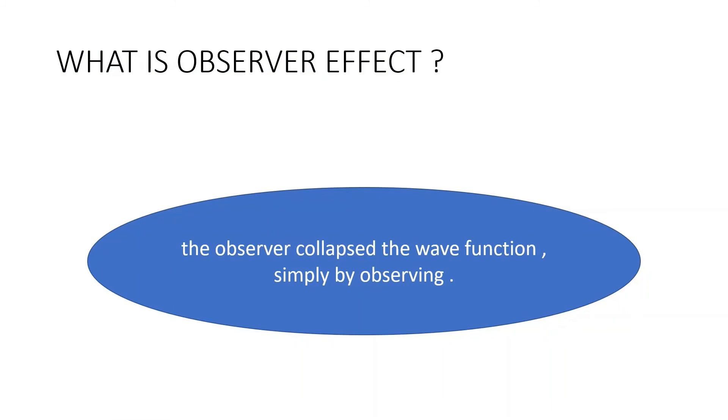So finally, we can conclude what is this observer effect in quantum mechanics? It is the observer collapsed the wave function simply by observing.